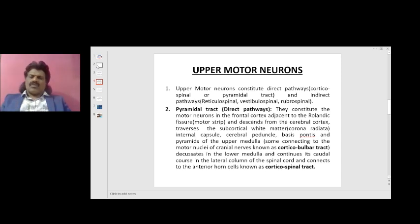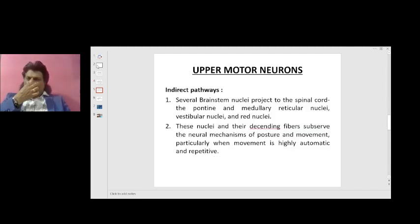Whereas others come down, decussate in the lower medulla, and continue its caudal course in the lateral column of the spinal cord and connect to the anterior horn cells, known as corticospinal tract. So upper motor neurons consist of two components: corticobulbar tract and corticospinal tract. Likewise, lower motor neuron also consists of two components: the cranial nerves and the peripheral nerves.